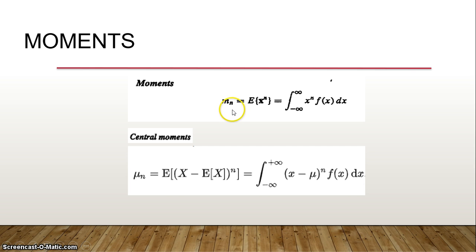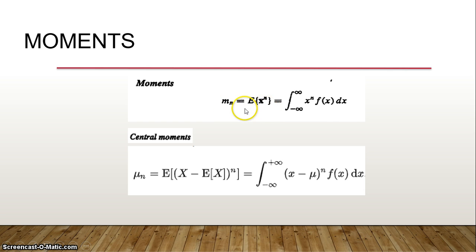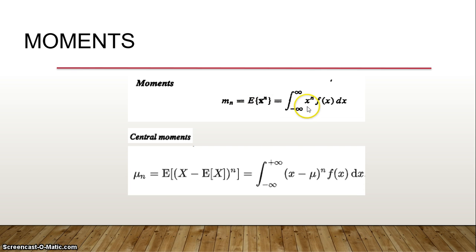When n equals 1, it is expectation of x, which is the same as the mean. m2 is E[x²], which is the mean square value. m3 is E[x³]. m0 is expectation of 1, which is always equal to 1. The density function changes with the mean, and like that you can calculate any order moment.